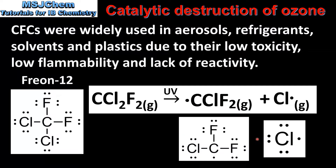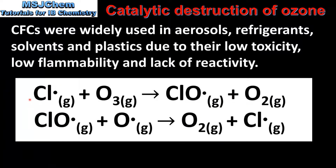The chlorine radical reacts with ozone as follows. In the first step, a chlorine radical reacts with ozone to form a chlorine monoxide radical and oxygen gas. In the second step, the chlorine monoxide radical reacts with an oxygen radical to form oxygen gas and a chlorine radical. We can see that the chlorine radical is acting as a catalyst because it is regenerated in the second step and can then go on to react with more ozone molecules.